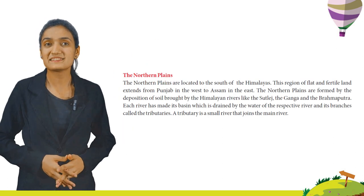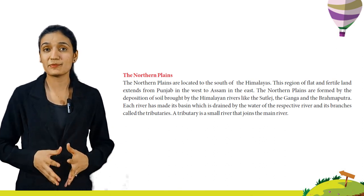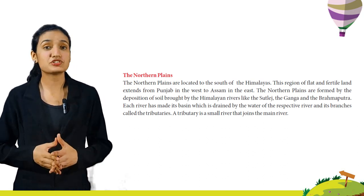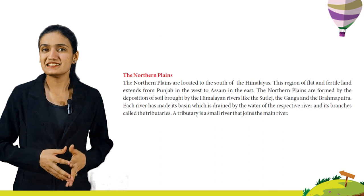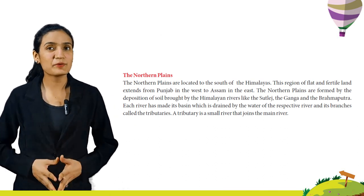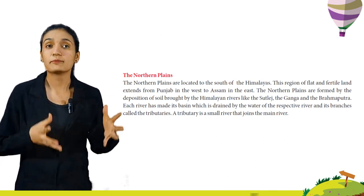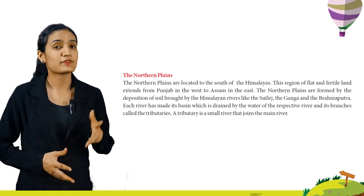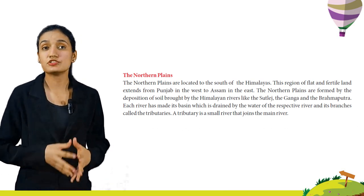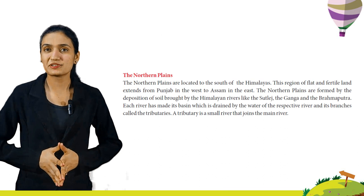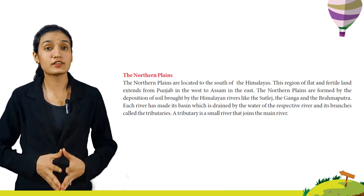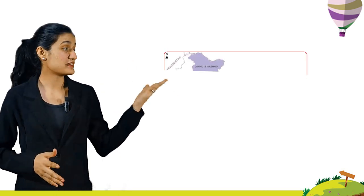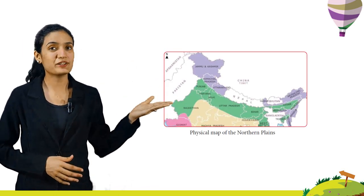The Northern Plains are located to the south of the Himalayas. This region of flat and fertile land extends from Punjab in the west to Assam in the east. The Northern Plains are formed by the deposition of soil brought by the Himalayan rivers like Satlaj, the Ganga and the Brahmaputra. Each river has made its basin which is drained by the water of the respective river and its branches called the tributaries. A tributary is a small river that joins the main river. Here you can see the physical map of the Northern Plains.